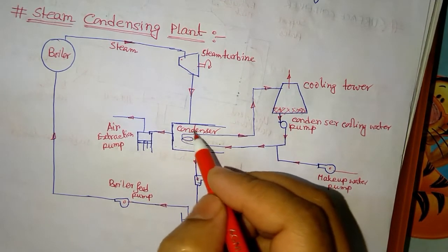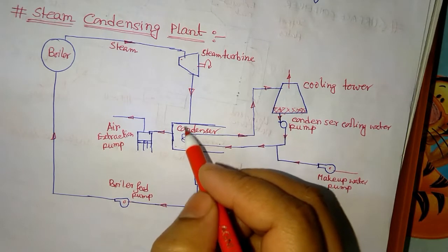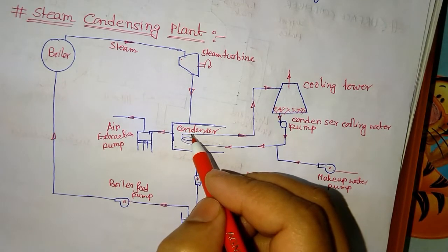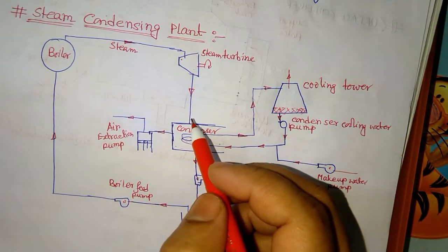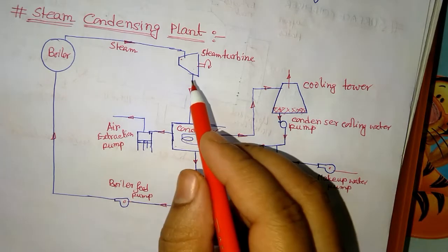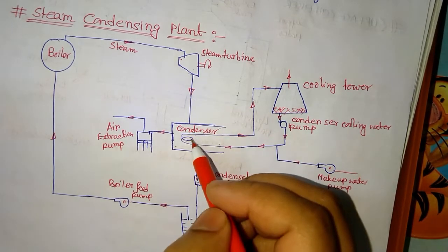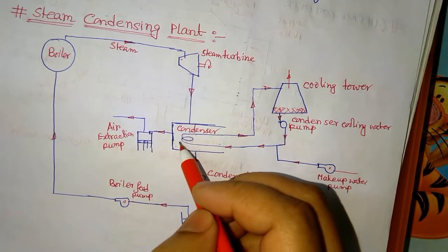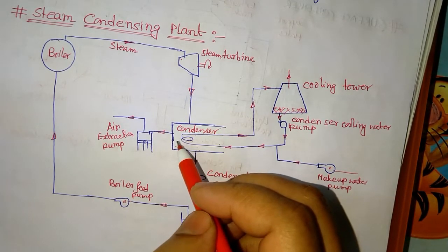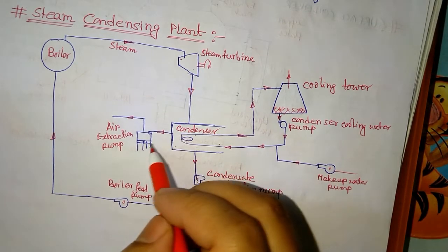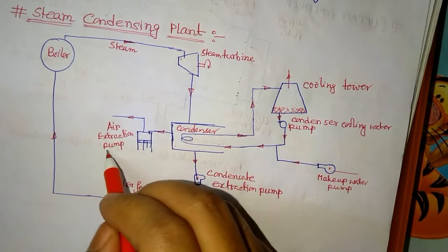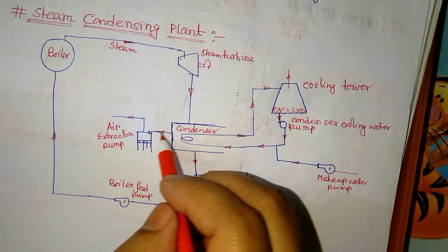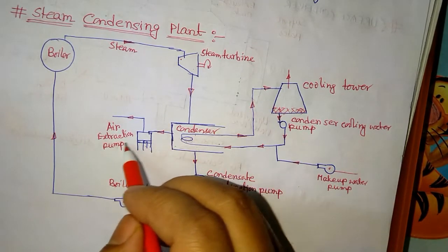We will later see the effects of leaked air into the condenser. Whatever air is entering with the steam into the condenser, that air is extracted by the air extraction pump and removed from the condenser.